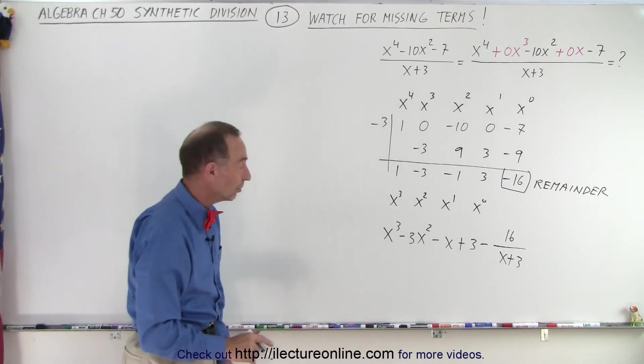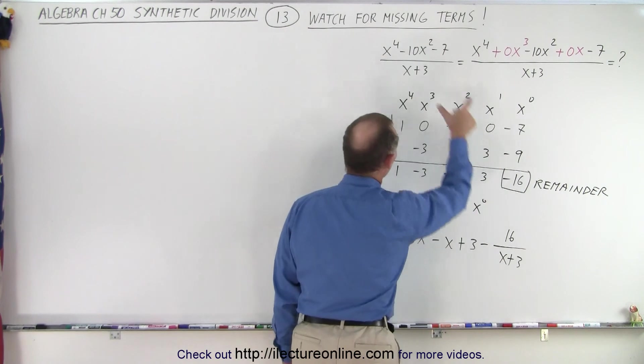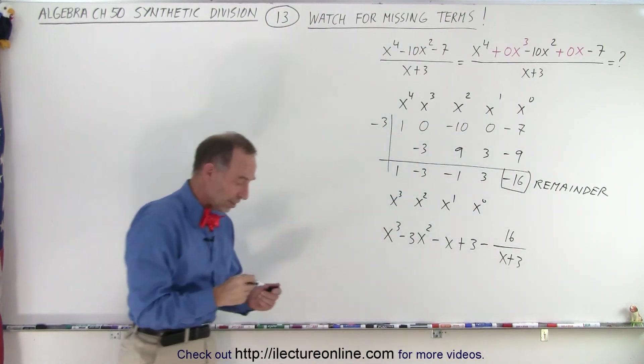And notice, that is the final result. We have the result over here plus the remainder of minus 16 over the x plus 3 in the denominator.